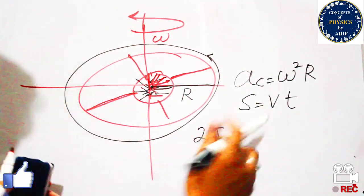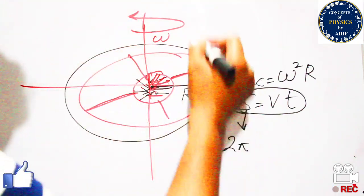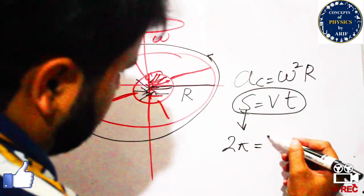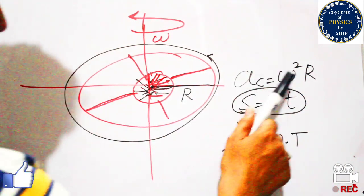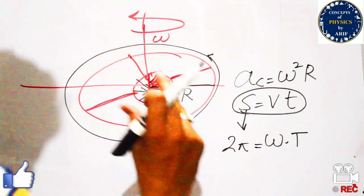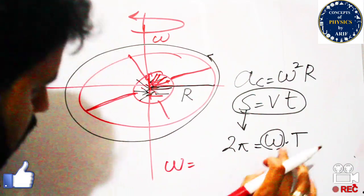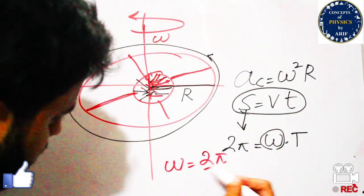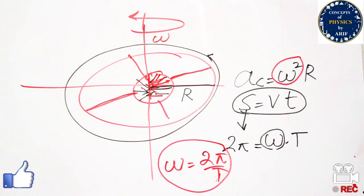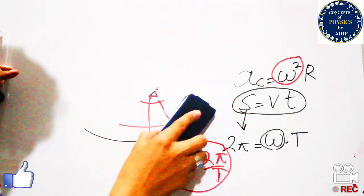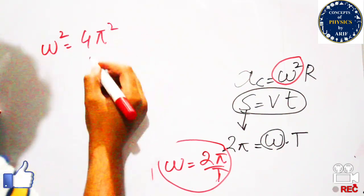We know the relation S = v × t. Converting this from linear to circular path: S is denoted by 2π (the distance covered), v is the linear velocity converted to angular velocity omega, and t is the time taken for the whole circular path. From this, we can find omega: omega = 2π / t. Squaring both sides gives omega² = 4π² / t².